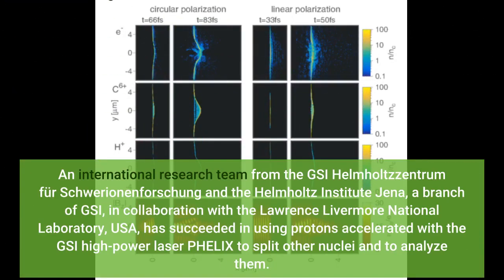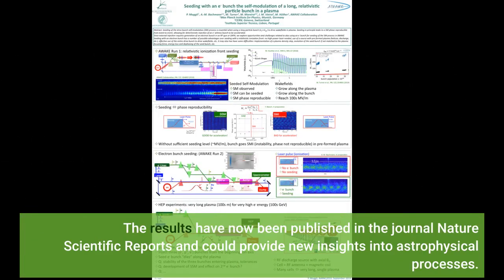An international research team from the GSI Helmholtzcentrum für Schwerionenforschung and the Helmholtz Institute Jena, a branch of GSI, in collaboration with the Lawrence Livermore National Laboratory, USA, has succeeded in using protons accelerated with the GSI high-power laser PHELIX to split atoms. The results have now been published in the journal Nature Scientific Reports and could provide new insights into astrophysical processes.